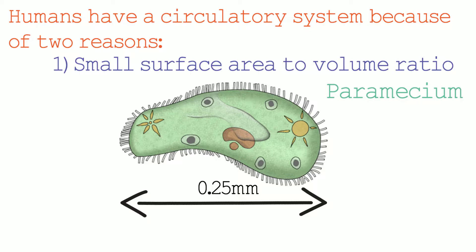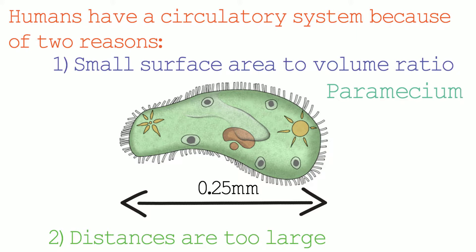The second reason why humans have a circulatory system is because the distances in the human body are too large. With a paramecium, the distances are very small — it is only about 0.25 mm long. This means substances the paramecium needs can get where they are needed by diffusion in sufficient quantities. Whereas with humans, the distances substances would have to travel are too great, and substances would reach certain places in less than sufficient quantities if left to diffusion rather than a circulatory system.